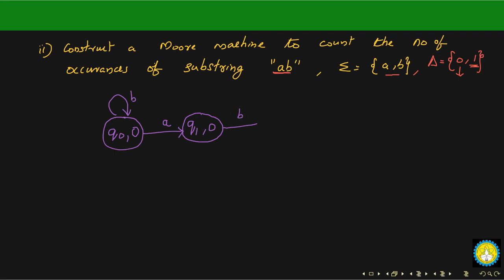From q1, if you see a 'b', I go to another state q2 and output 1 — meaning if you see the pattern 'ab' you get a one. Now at q1 we've defined the transition on 'b' to q2, but we also need to define the transition on 'a'. Remember: from every state every transition must be defined, similar to a DFA. At q0 we defined transitions on 'a' and 'b'; from q1 we defined transition on 'b' going to q2.